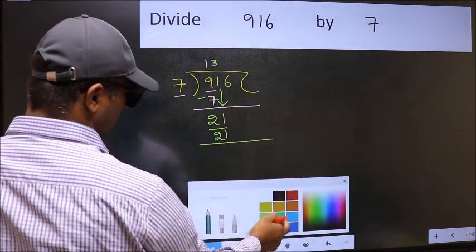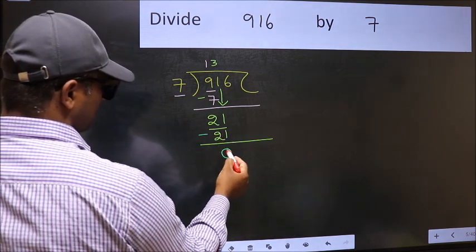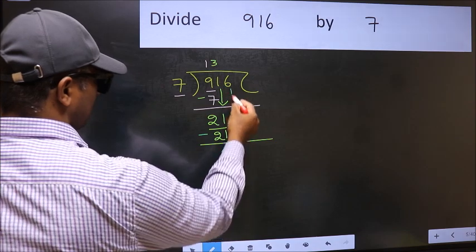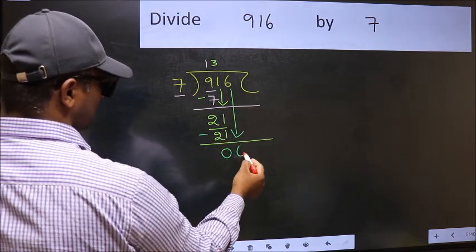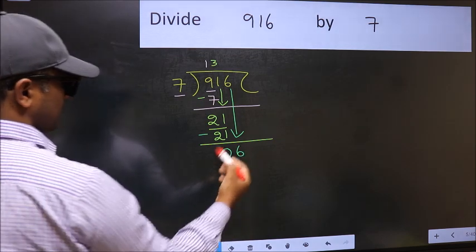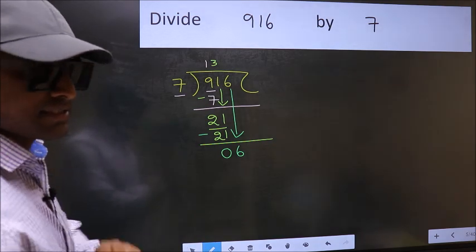Now you should subtract: 21 minus 21 equals 0. After this, bring down the beside number. So, 6 down. After this step, the mistake happens. And the mistake is this.